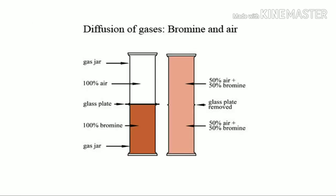We will look at an experiment of diffusion of gas. There are two gas jars, one is on top of another which is separated by a glass plate. The bottom jar contains bromine gas which is reddish brown color, and the top jar contains air which is colorless.